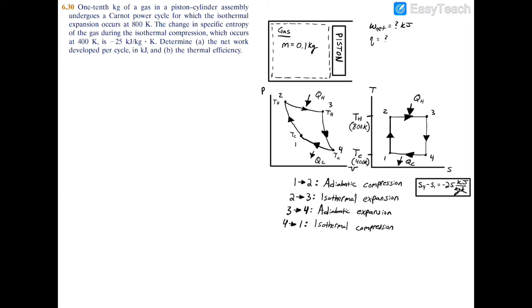We have a change in specific entropy here. The problem states that during the isothermal compression (process 4-1), we have a change in specific entropy of -25 kJ/(kg·K). Just so you know, this is process 4-1, and this should be S1 - S4, so let me correct that.